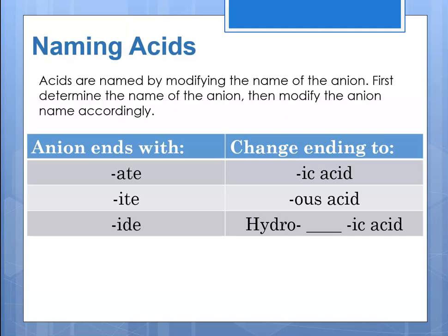For instance, the sulfate anion would become sulfuric acid. The sulfite anion would become sulfurous acid. And if it was the sulfide anion, it would be hydrosulfuric acid.